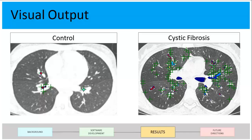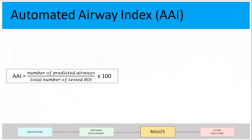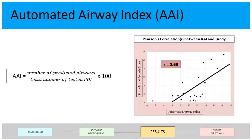This is a visual output of the results of my program. All of these colored areas are where there are known airways — we already knew they were there — and the green crosses are where my program predicted a location of an airway to be. There are definitely some that aren't correct, but overall it is correct. To get an actual automated score, I created an AAI — automated airway index — which is the total number of regions the program predicted as an airway over the total number of tested images, times 100.